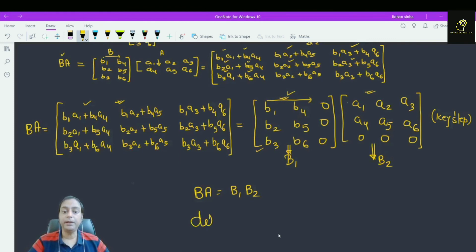Now, this we assume B1 and this matrix we assume B2. Now, what is determinant of BA? Determinant of BA is same as determinant of B1 into B2.